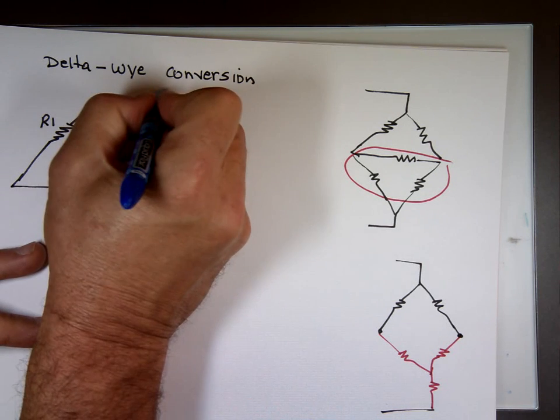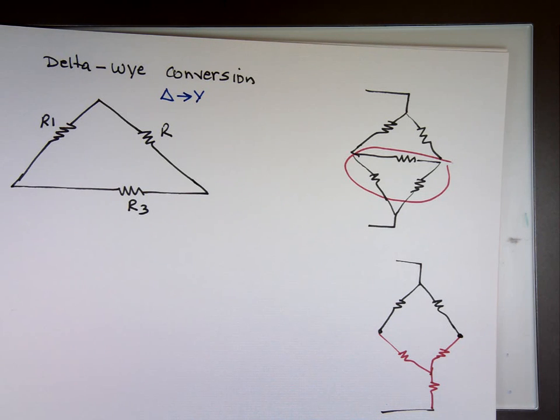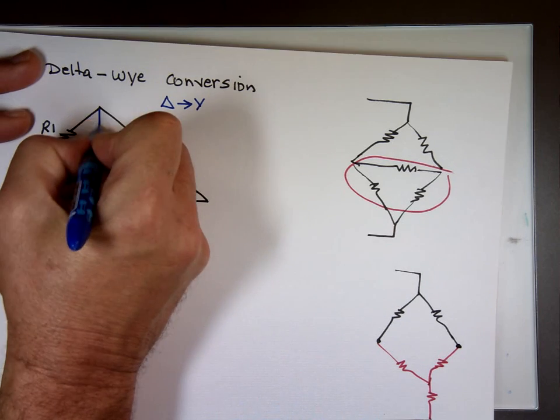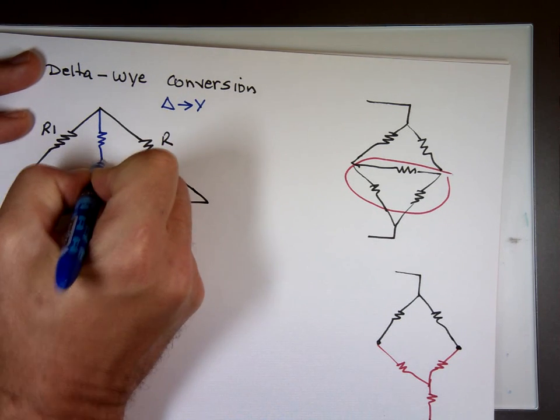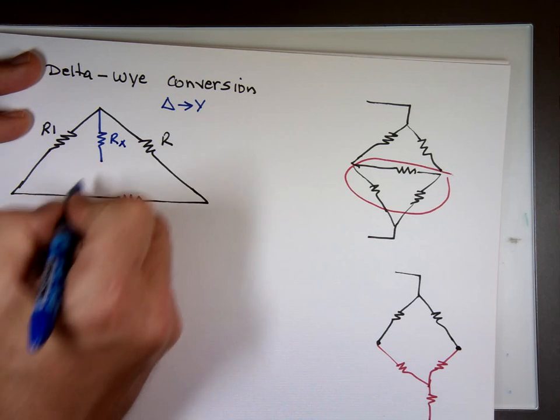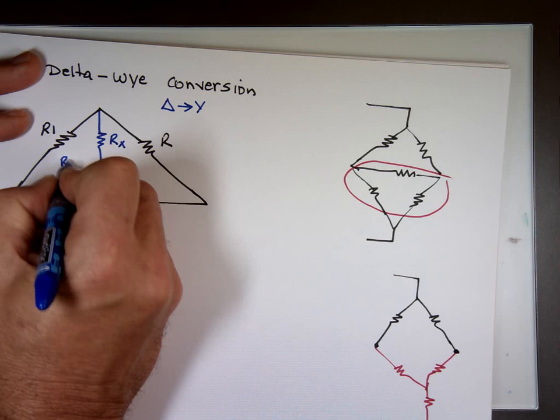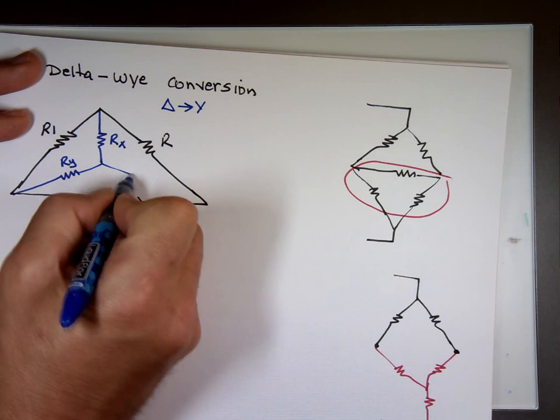From delta to Y. I can replace this with one that looks like this, an equivalent value. I'm going to call that R sub X. I'm going to call this R sub Y and R sub Z.